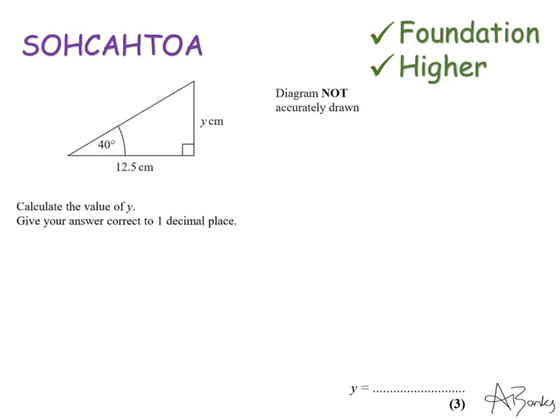Hello everyone and thanks for tuning in to my online lesson on SOHCAHTOA. SOHCAHTOA is used to find either missing angles or missing sides in right angle triangles. It's a step up from Pythagoras because Pythagoras only deals with missing sides.